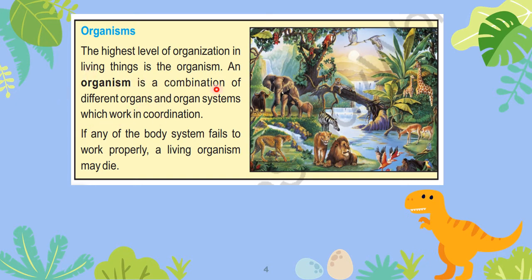An organism is a combination of different organs and organ systems which work in coordination. If any of the body systems fails to work properly, the living organism may die.